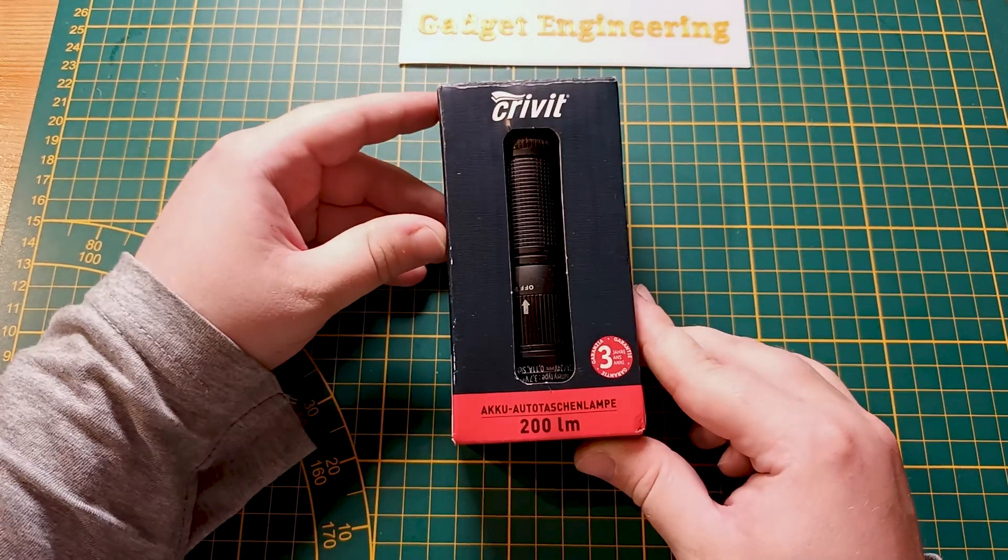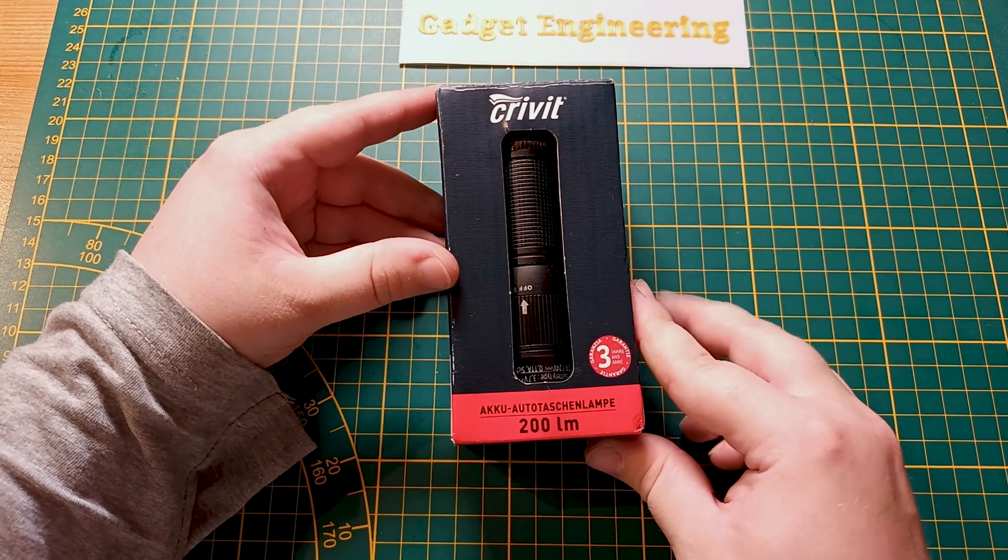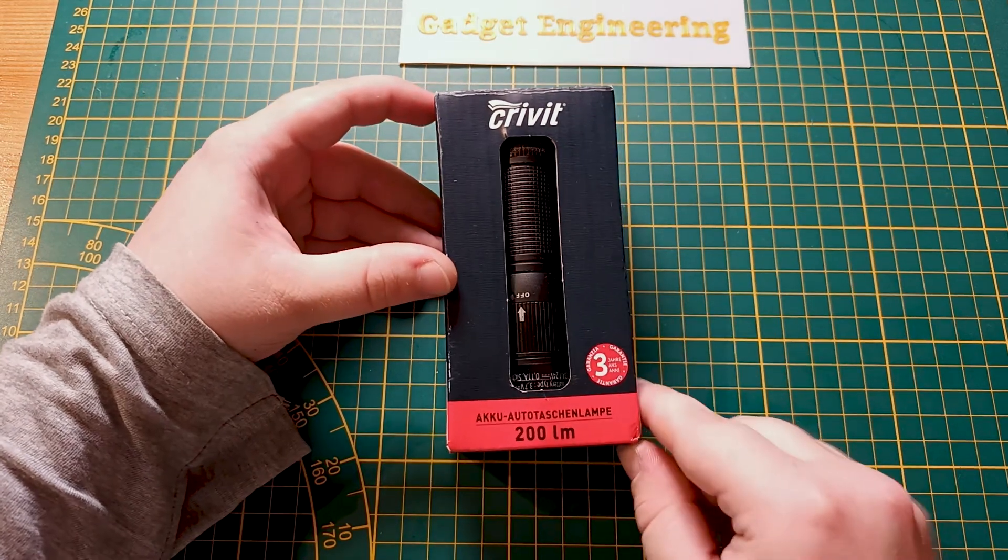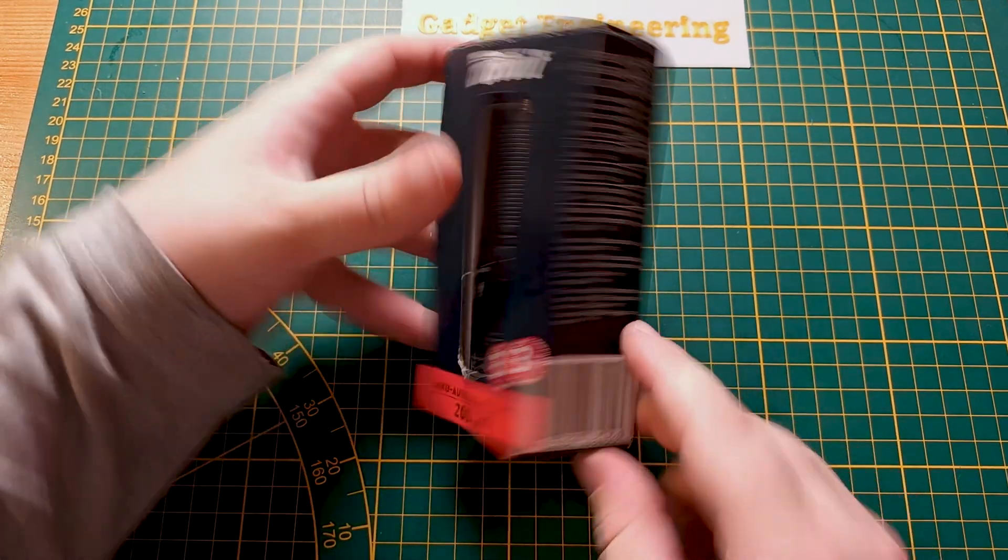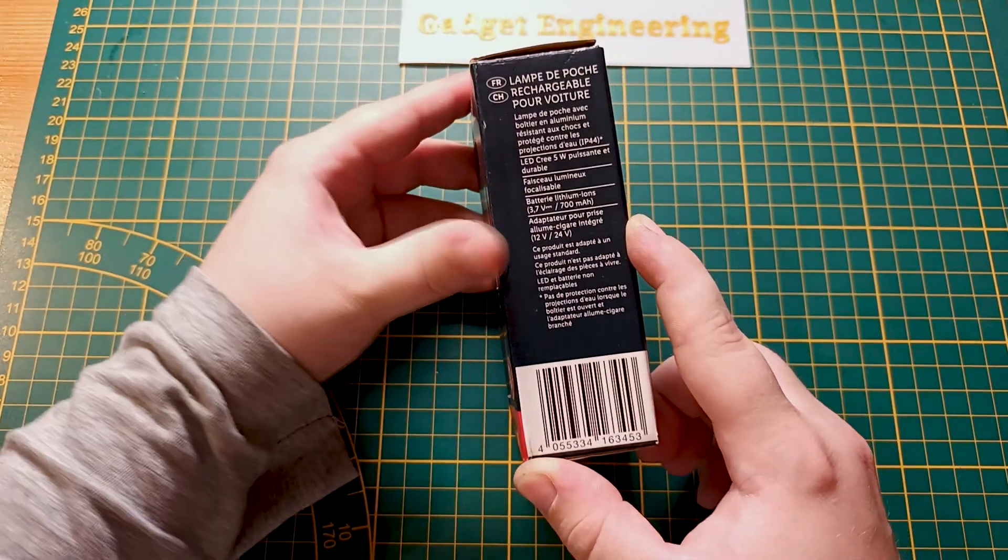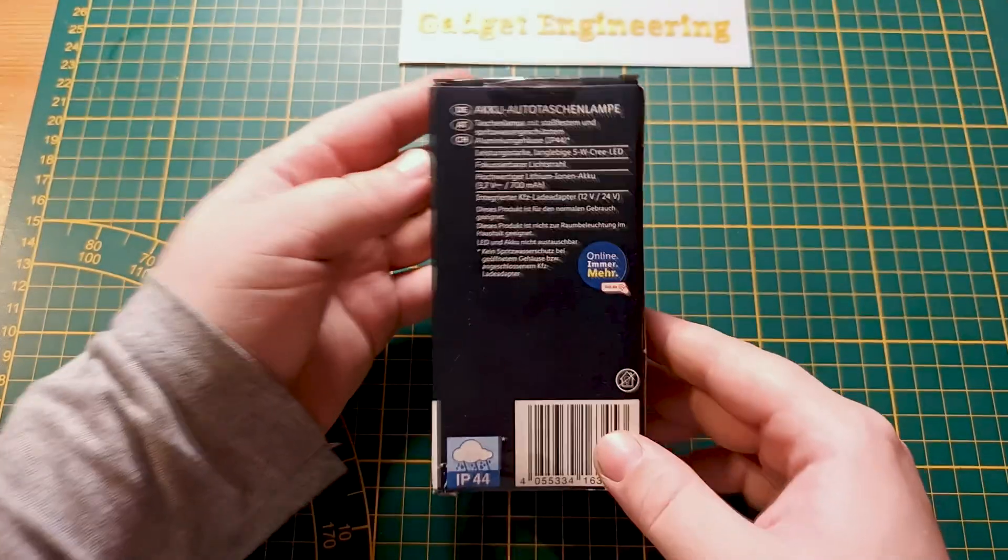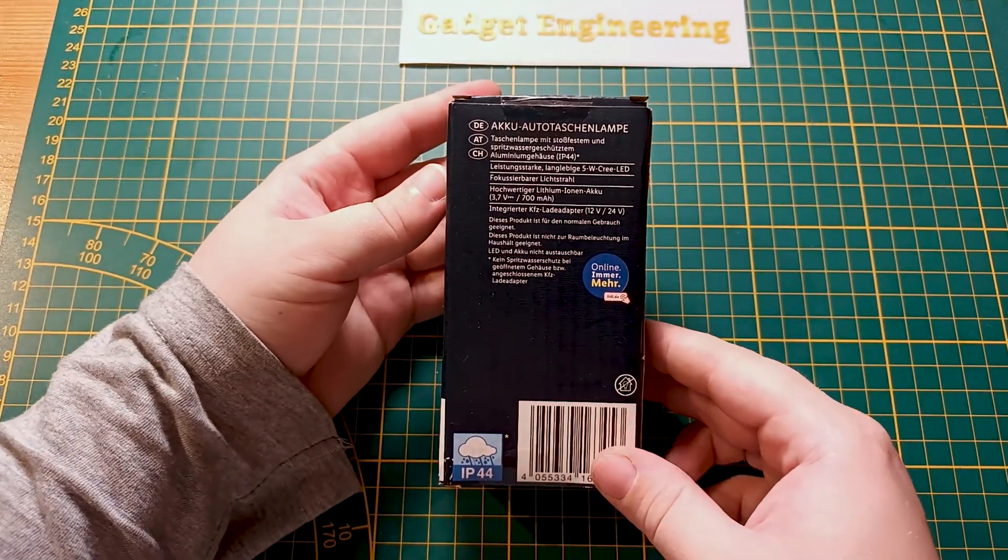So today we're going to have a look at Lidl's addition to the battery lamp selection. This is a car battery lamp that's been advertised as having a 5 watt Cree LED, water protection IP44, and a very nice small compact form factor.